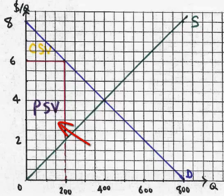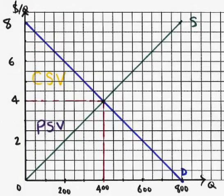So the PSV is 1000 and the CSV is 200, giving a total surplus value of 1200. Recall that at a price of 4 the total surplus value was 1600. When the price goes from 4 to 6, producer surplus value increases from 800 to 1000, while consumer surplus value decreases from 800 to 200. Producer surplus value is therefore increasing by 200, consumer surplus value is decreasing by 600, and the change in total surplus value is negative 400.